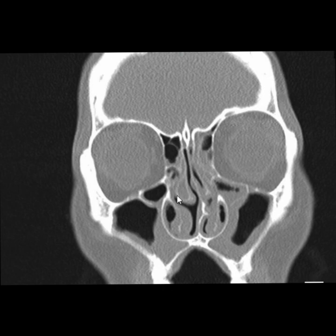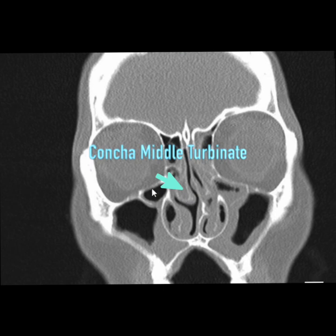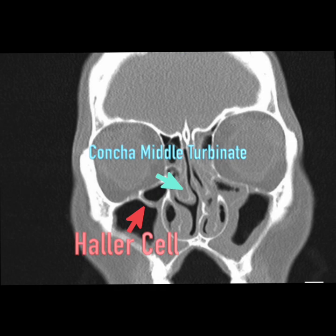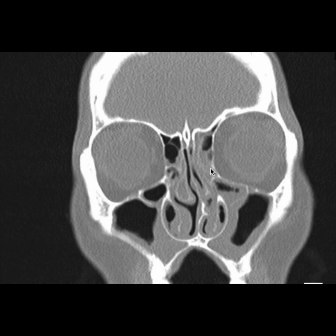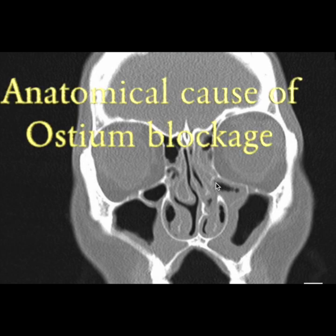Also, the middle turbinate has an air cell — there's a concha bullosa — and a Haller cell. This overcrowding because of the Haller cell and concha can again cause sinusitis. This patient will be symptomatic on both sides and will have on-and-off sinusitis, mainly because of the anatomical blockage. On the left side, the spur, the Haller cell, and the crowding are all causing blockage of the ostiomeatal complex. The frontal cell may also be causing blockage of the frontal recess. On the right side, the prominent Haller cell and concha will also cause ostiomeatal blockage.